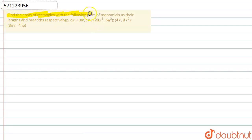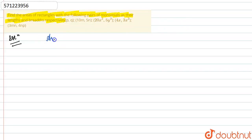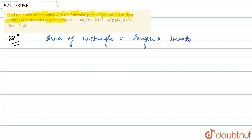Hello friends, the question is: find the areas of rectangles with the following pairs of monomials as their lengths and breadths respectively. We are given five such pairs and we need to find the area of each rectangle. The formula for area of rectangle is length into breadth.